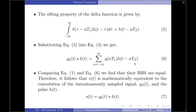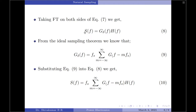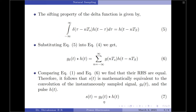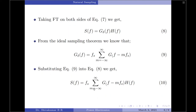Therefore the LHS can also be equated, as shown in equation 7. The LHS of equation 1, which is s(t), equals the LHS of equation 6, which is g_delta(t) convolved with h(t). Now, let us take the Fourier transform on both sides of equation 7 to get S(f) equals G_delta(f) into H(f). Here, the Fourier transform of g_delta(t) is G_delta(f), the Fourier transform of h(t) is H(f), and the Fourier transform of s(t) is S(f).